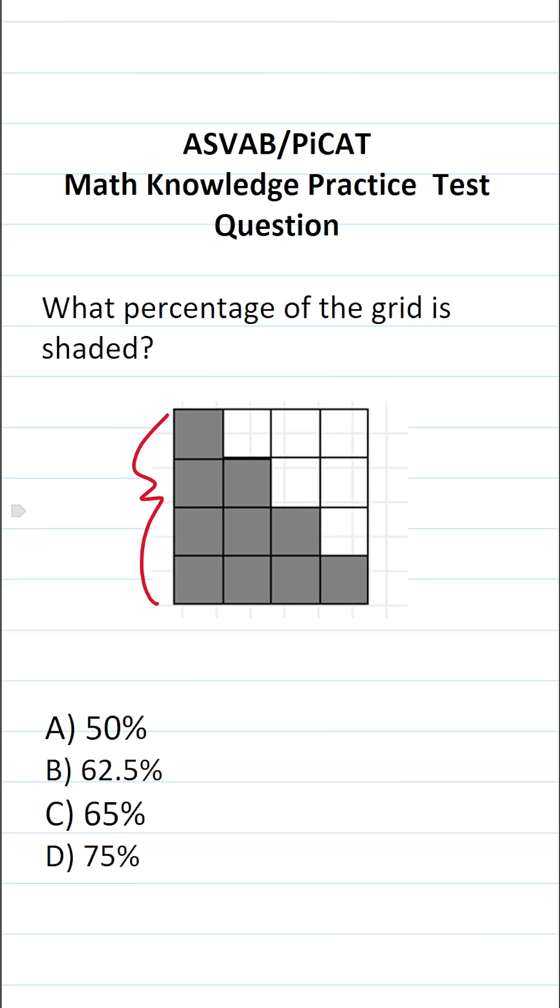So in order to answer this question, the first thing you want to determine is how many squares are in this grid. This is a 4x4 grid, so that means there are 16 squares in this grid in total.